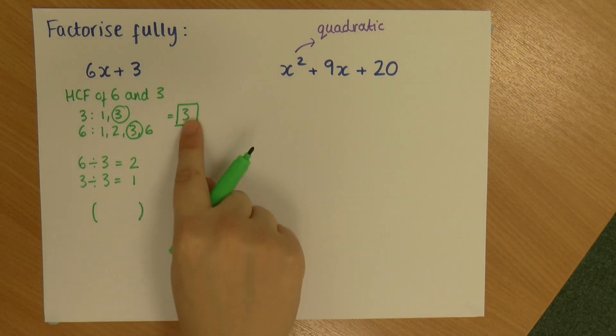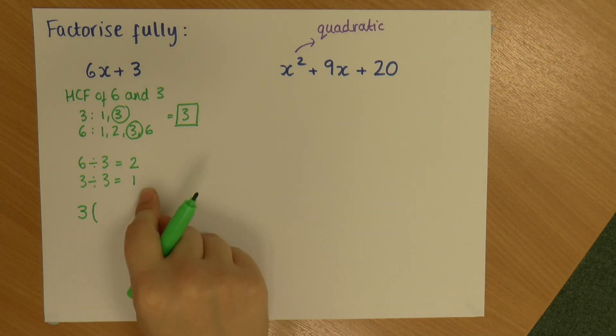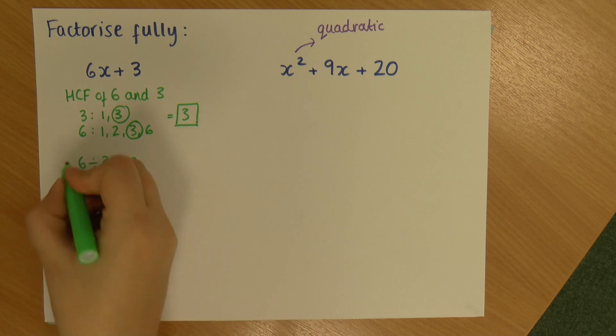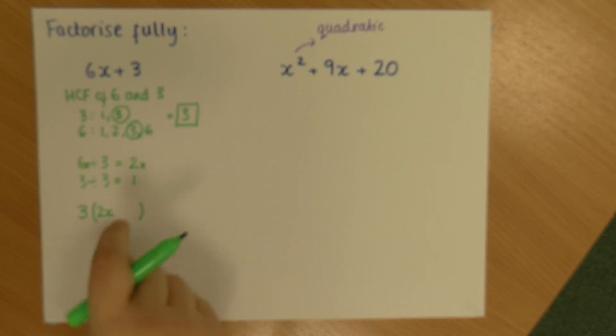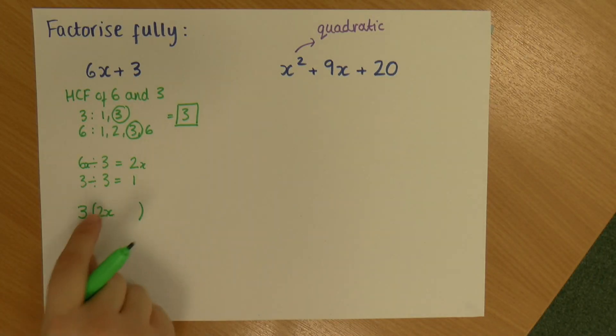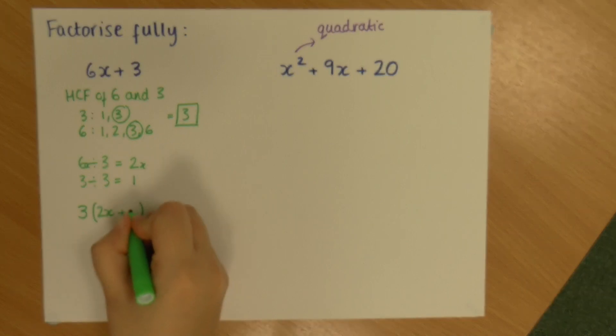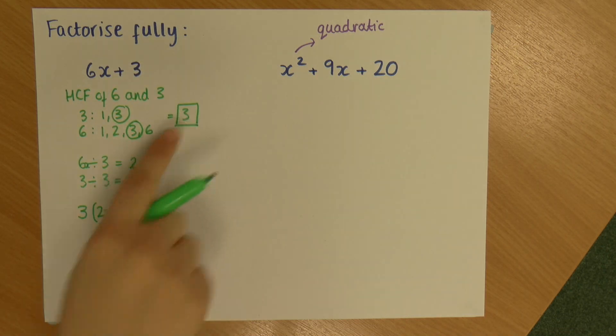My highest common factor goes outside and inside goes these numbers. Now the reason I did these divisions was I did 6 divided by 3. Well technically, it's actually 6x divided by 3 which gives me 2x. So I've divided that 6x by 3 because I've taken that out to give me 2x, and now I've done 3 divided by 3 to give me 1. So I have essentially divided that whole expression by the highest common factor and the answer is in the bracket.